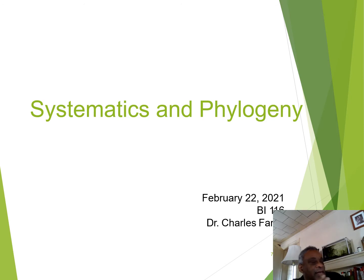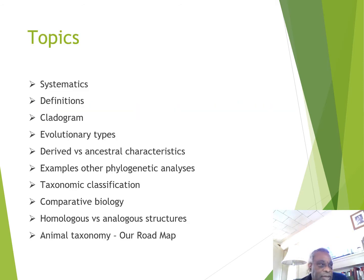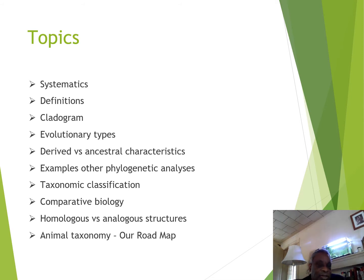Let's move on to the next subject: systematics and phylogeny. I'm going to post a video this week that will talk about these topics in more detail, but for now I want to briefly go over the major concepts — what systematics is, the cladogram, different types of evolutionary phylogenies, derived versus ancestral characteristics, phylogenetic analysis methods, taxonomic classification and the binomial system, homologous versus analogous structures, and a roadmap for the rest of the semester.